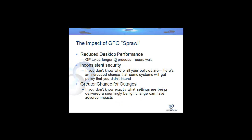What's the impact of GPO sprawl? GPO sprawl causes a lot of different problems. One of them is reduced desktop performance. The more group policy objects that you have, the more redundant, duplicate, or conflicting settings you have, the longer GP takes to process. Users end up having to wait when their machine starts up or when they log on. Group policy can cause delays, and that's what you want to avoid.